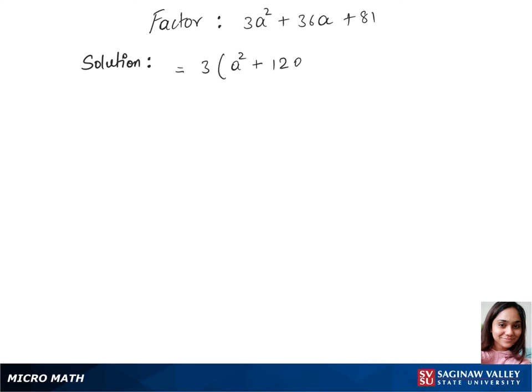So we'll put 12a plus 81. We have 27 there. 27 times 3 is 81. So now let's find factors for 27. Factors of 27 are 1 times 27 and 9 times 3 is 27.